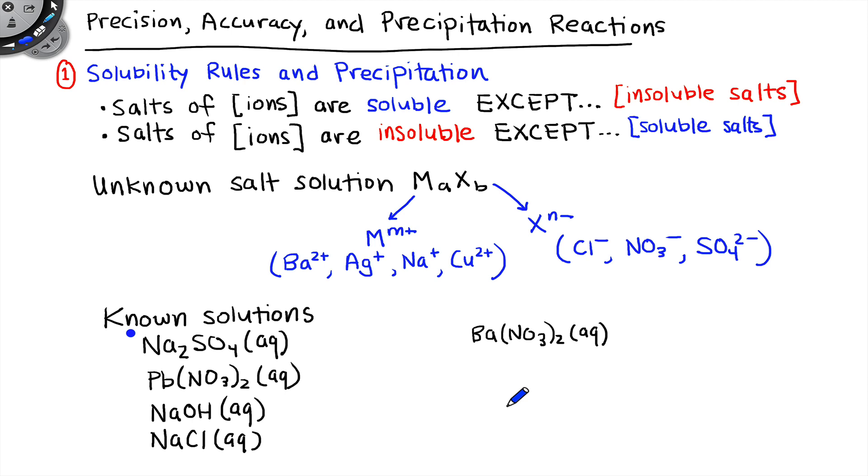Keep in mind that when each of these solutes is dissolved in water, they're all ionic compounds, they all dissociate to form their component ions. So sodium sulfate forms Na+ and SO4 2-, lead(II) nitrate gives Pb2+ and NO3-, sodium hydroxide gives Na+ and hydroxide anion, sodium chloride gives Na+ and Cl-, and barium nitrate gives Ba2+ and NO3-. So we have both of those ions in solution in these known solutions.